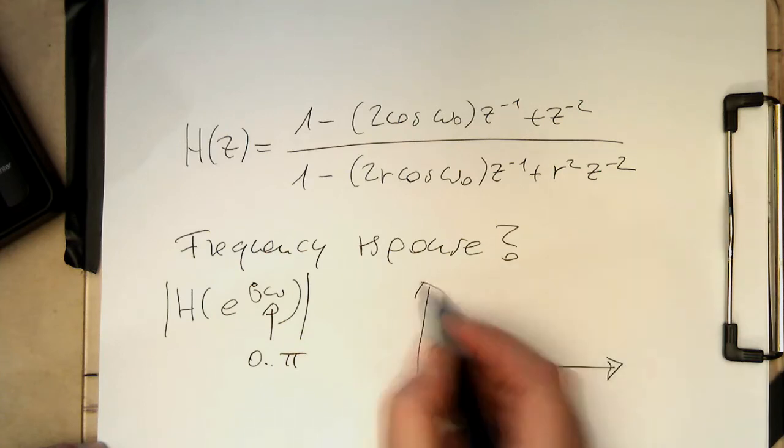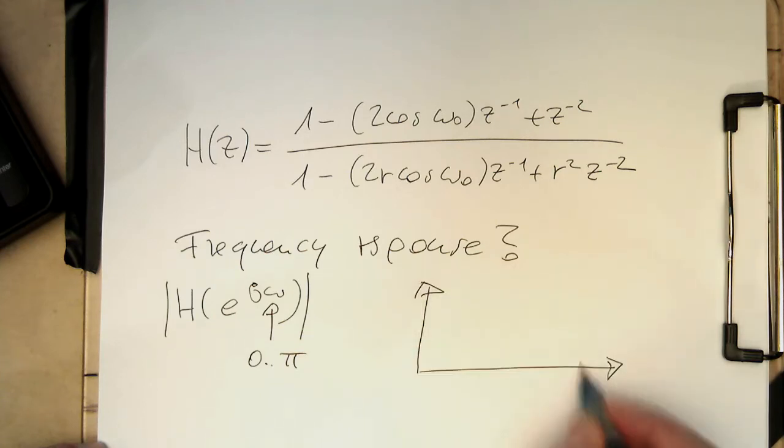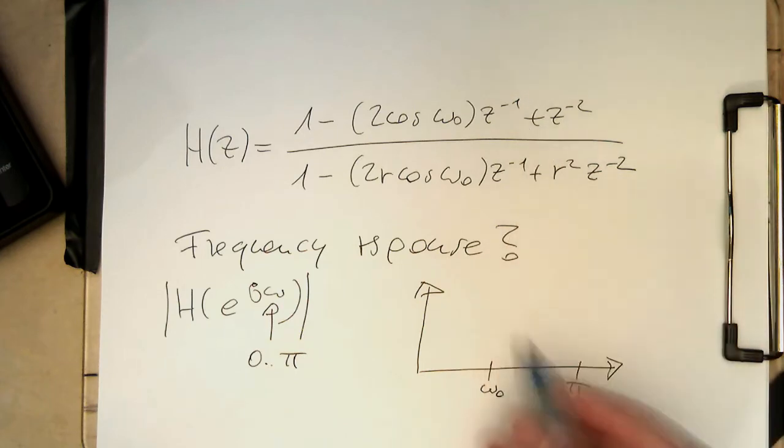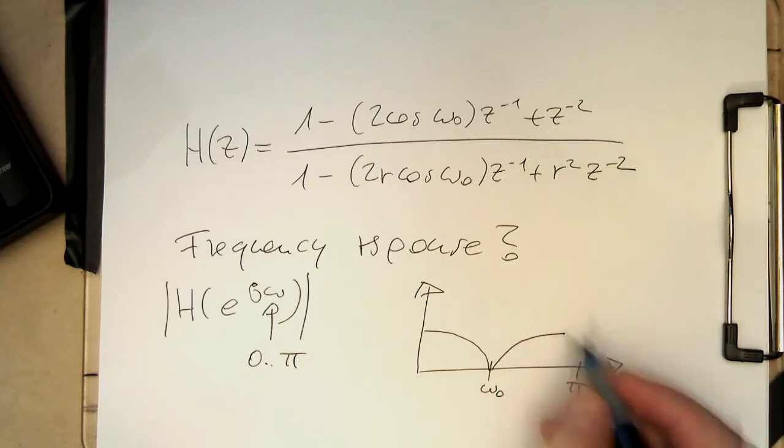And so what do we expect? So we expect that if we are running from zero to pi here, that there where there is omega zero, that something is happening here. So we know that zero here creates essentially a dip here, reaching zero here.